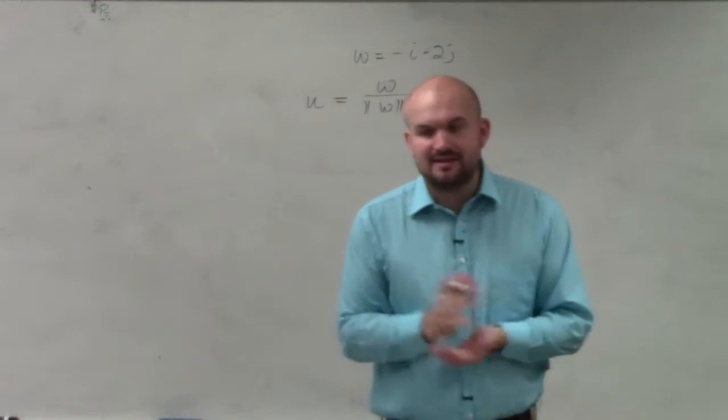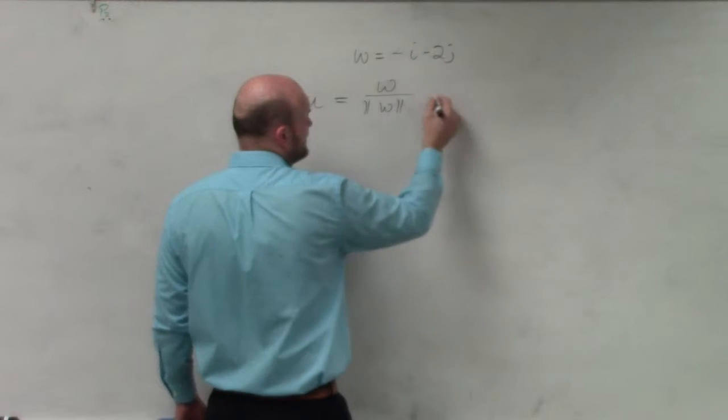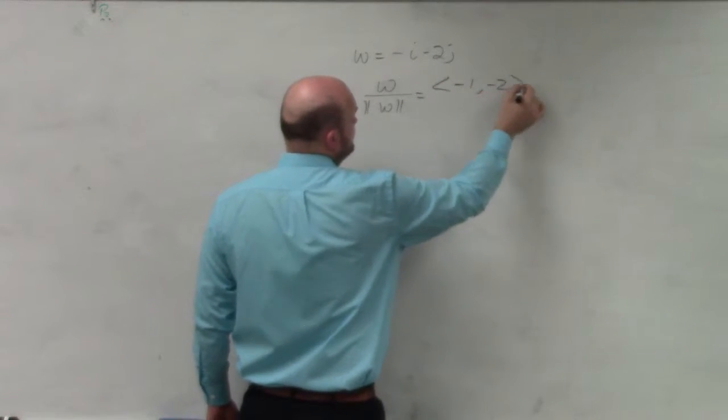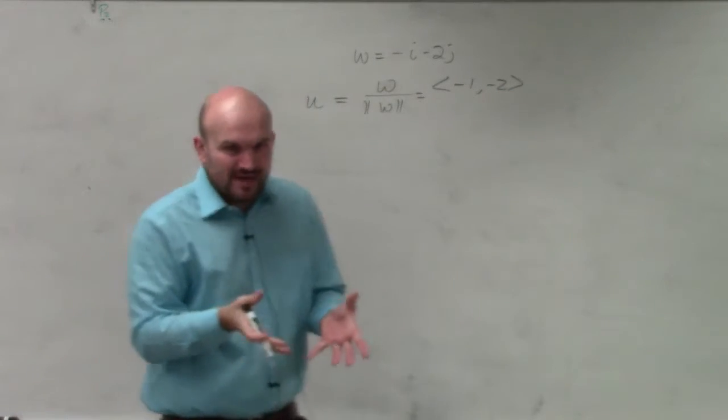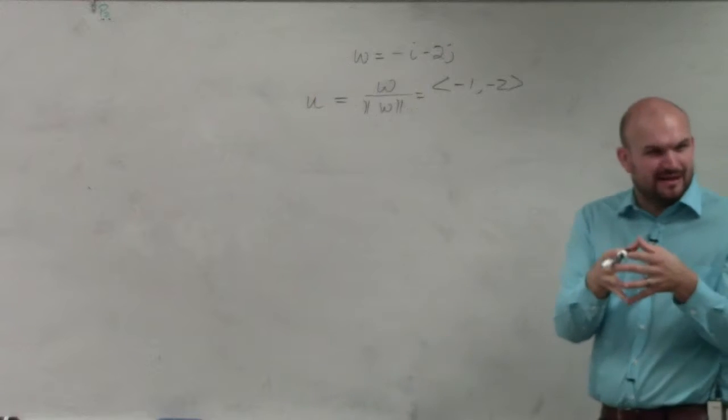Now, I prefer to find the vector, I just like to write it in component form. You could leave it in this format, but if we're going to write this in component form, it would be negative 1 comma negative 2. And I just like writing in component form, because when I have it in that format, it's very easy for me to find the magnitude.